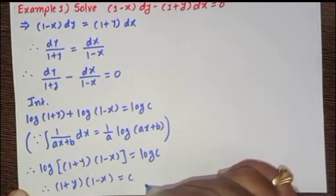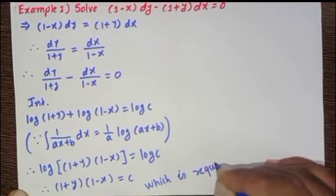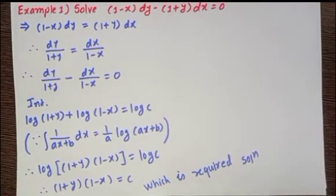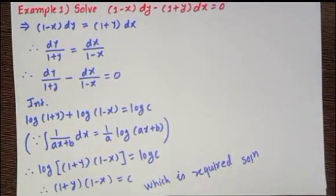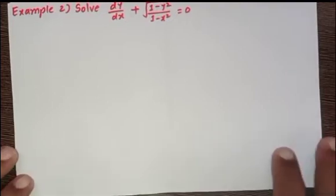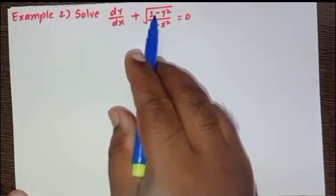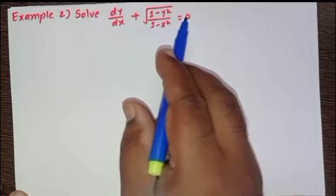This is the required solution of (1 - x)dy - (1 + y)dx = 0. Now, the next example: solve dy/dx + √(1 - y²) / √(1 - x²) = 0.